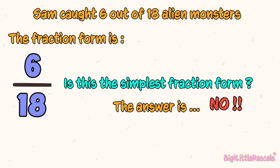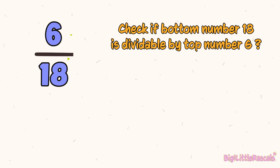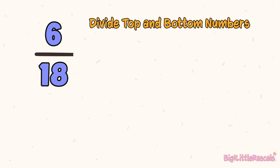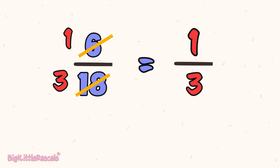Then let's do the checking if 6 out of 18 is the simplest fraction form. The answer is no. Why? Let's first check if the bottom number 18 is dividable by the top number 6. Yes, 18 is dividable by 6, so this fraction can still be simplified further. Let's divide both top and bottom numbers by 6. To simplify a fraction, both top and bottom numbers have to be divided by the same common factor, which is number 6. 6 divided by 6 gives us 1. 18 divided by 6 gives us 3. The result is 1 third. And this is the simplest form the fraction can be, because top and bottom numbers can't be divided any further without still giving a whole number as the result.